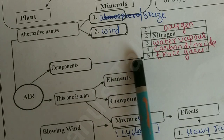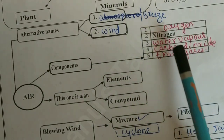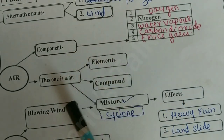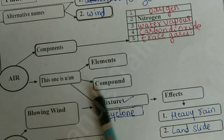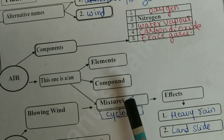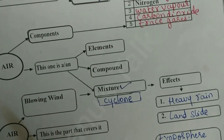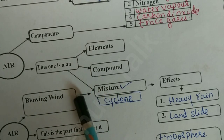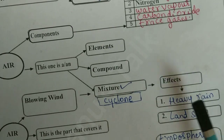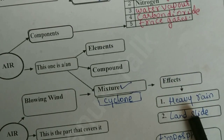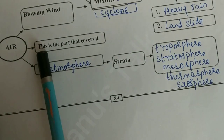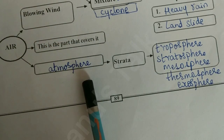Components of air: oxygen, nitrogen, water vapor, carbon dioxide, and trace gases. Air is an element, compound, or mixture? It is a mixture. The blowing wind is cyclone, and cyclone causes heavy rain and landslide. This is the part that covers it — that is the atmosphere.